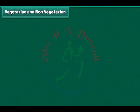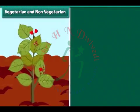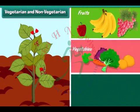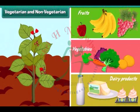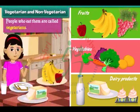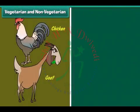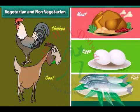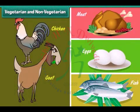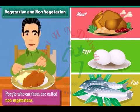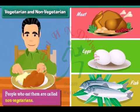Plant products like fruits, vegetables and dairy products are vegetarian food. People who eat them are called vegetarians. Animal products like meat, eggs and fish are non-vegetarian food. People who eat them are called non-vegetarians.